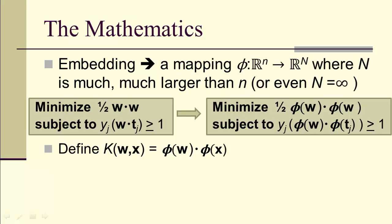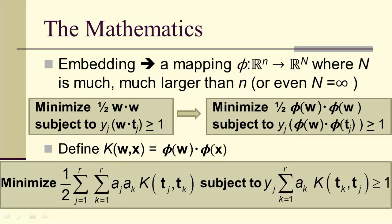We're going to define our kernel to be the dot product of nonlinear images of w and x under this nonlinear embedding. So, K(w,x) equals phi(w) dot phi(x). And that means we want to minimize over the scalars, a_j, subject to the boundary condition.